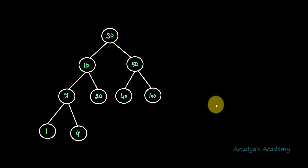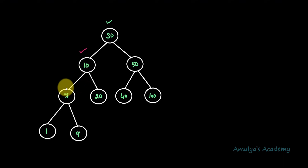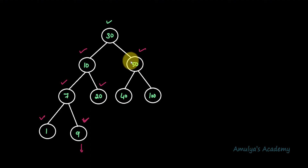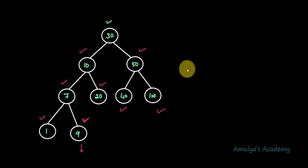Let's take another example. Root is 30, left side has 10, and under 10 we have 7 on the left and 20 on the right. 20 is greater than 10 and less than 30 — correct. Under 7 we have 1 and 9. 9 is greater than 7 but less than 10 and 30, so it is correctly placed. On the right side we have 50, greater than 30. Under 50 we have 40 on the left — greater than 30 but less than 50 — and 100 on the right, greater than 50. This is a BST.